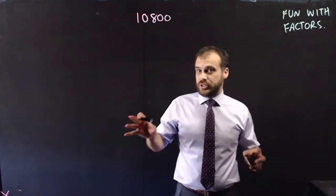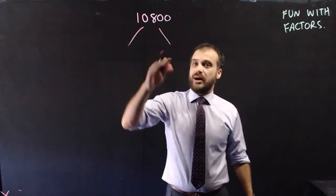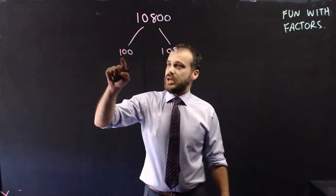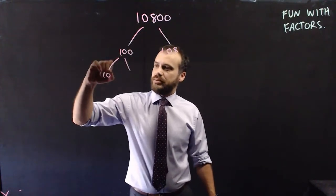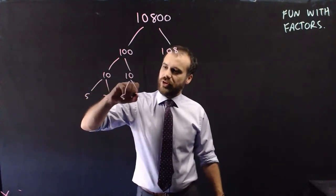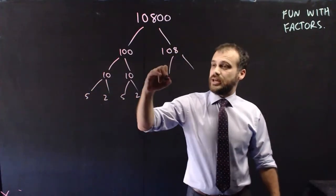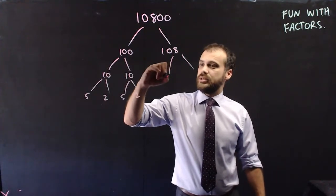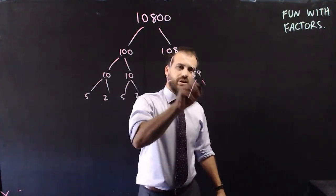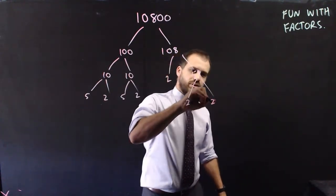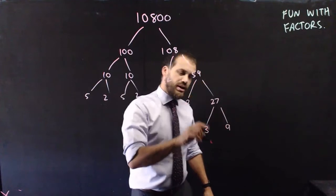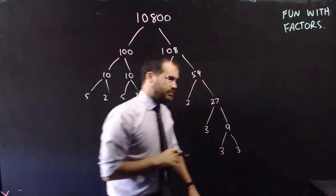First, I'm going to do the prime factorization. I do that just by breaking this up into two factors. I can see two zeros there, so 100 times 108. 100 is the same as 10 times 10, and 10 is the same as 5 times 2 — that's also 5 times 2. For 108, that's 2 times 54, and 54 is 2 times 27, and 27 is 3 times 9, and 9 is 3 times 3.